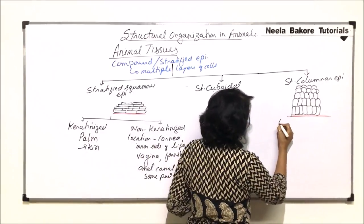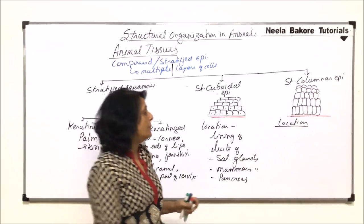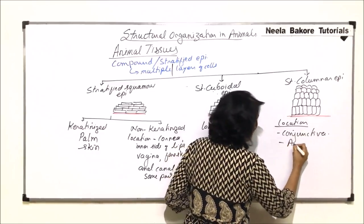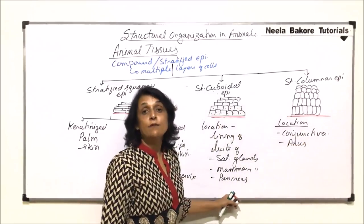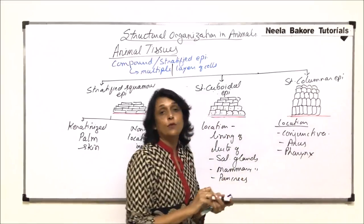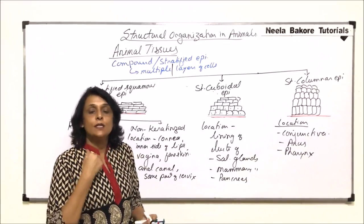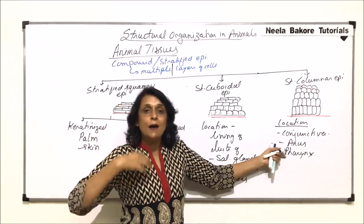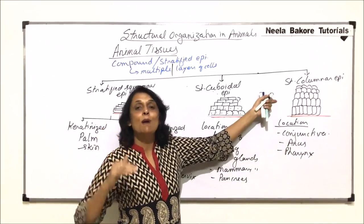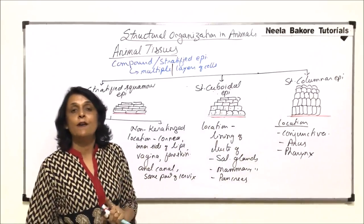This type of epithelium is found in areas where friction is maximum. It is found in the conjunctiva of our eye, the anus, and the pharynx. The pharynx is the area where we chew food and swallow it; when food is rubbed over this membrane, there is friction which could damage it. So it has to be multiple-layered, and in these areas we find the epithelium is stratified and columnar.